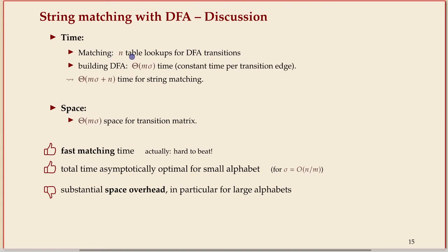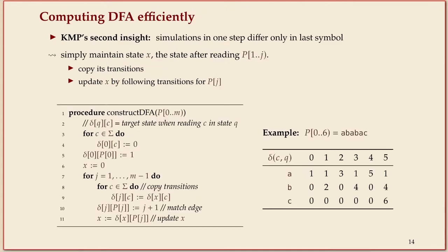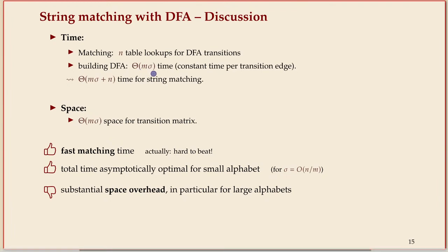When we have the automaton and read through the text once, it's just one table lookup per text character — essentially as fast as you can get. Building the automaton still requires filling the table: copying a column means writing every cell. So we need Θ(M × |Σ|) time, since that's the size of the output. The space for the string matching automaton is also M times sigma. Total matching time is M × |Σ| plus N.